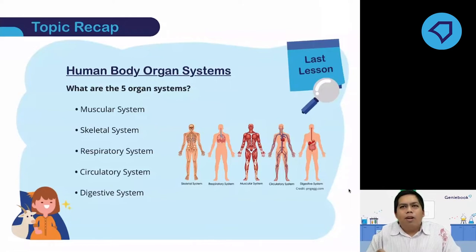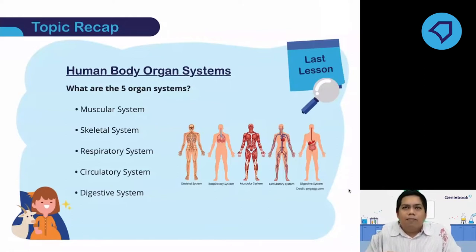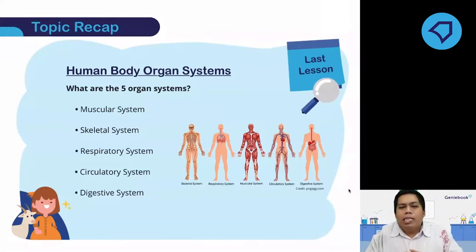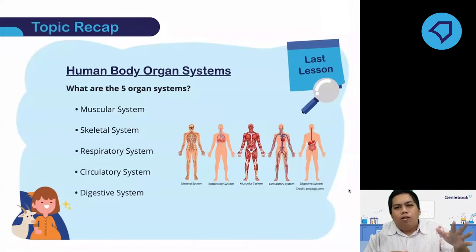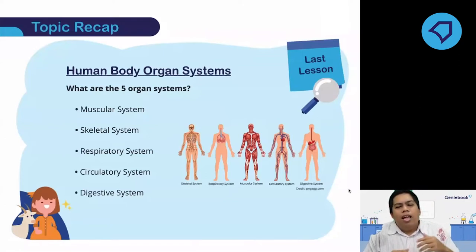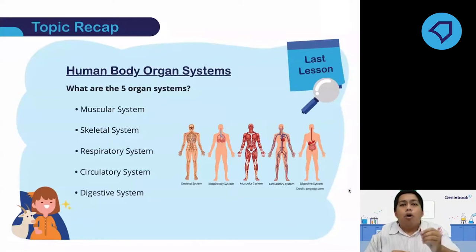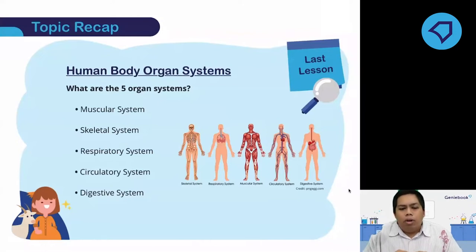And the last one, which you will learn next week onwards, is the digestive system. It's to break down food into simpler substances so that your body or your blood is able to absorb the digested food, and also to remove any undigested food in the large intestine. You will learn about the digestive system in more detail next week.